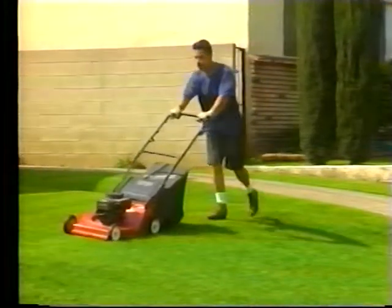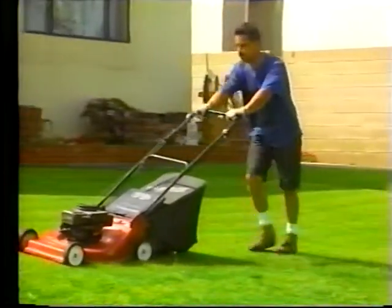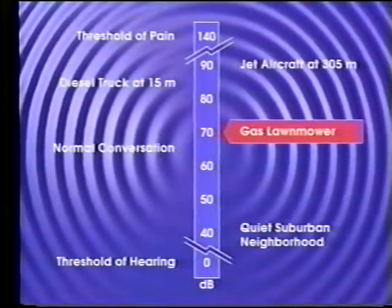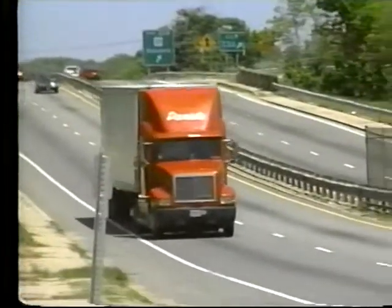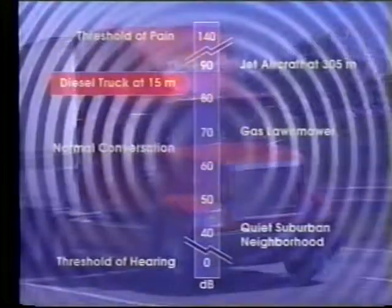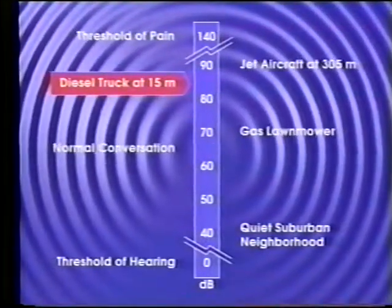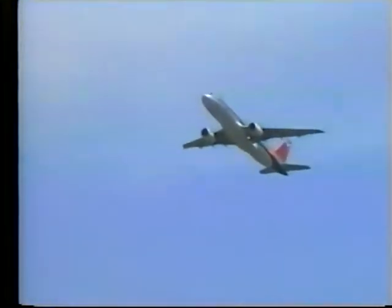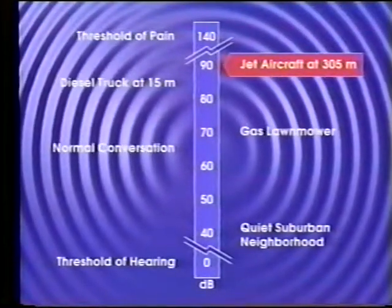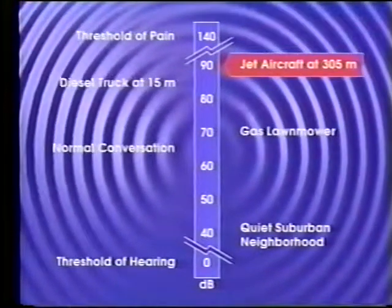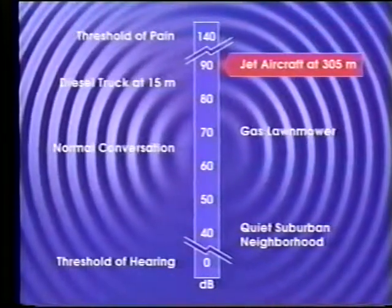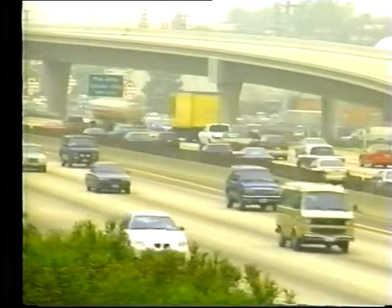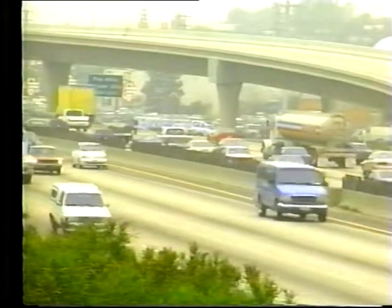A gas lawn mower 31 meters away will create a sound level of approximately 70 decibels. A diesel truck at highway speeds 15 meters away will achieve a maximum level of about 85 decibels. A state-of-the-art jet aircraft at 305 meters altitude will create a maximum level of about 90 decibels. With these common examples in mind, traffic on a busy highway 15 meters away can average as much as 80 decibels during peak travel periods.